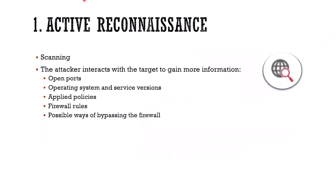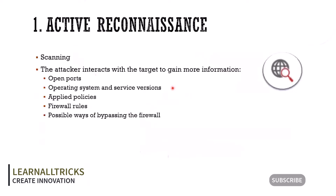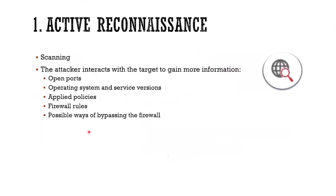Active reconnaissance is where you're going to interact with them to some degree. We'll be scanning them — port scans, vulnerability scans. We interact with the targets to get more information: what ports are open, what operating system or service versions they have, what policies they're running, what firewall rules they have, and whether there are ways to bypass their firewall. Of course, active reconnaissance should set off the target's alarms, assuming that they have alarms.